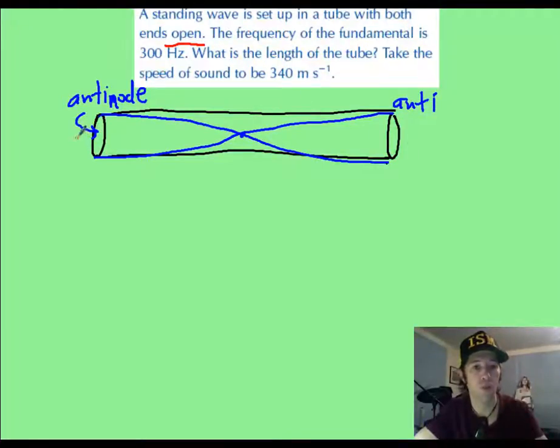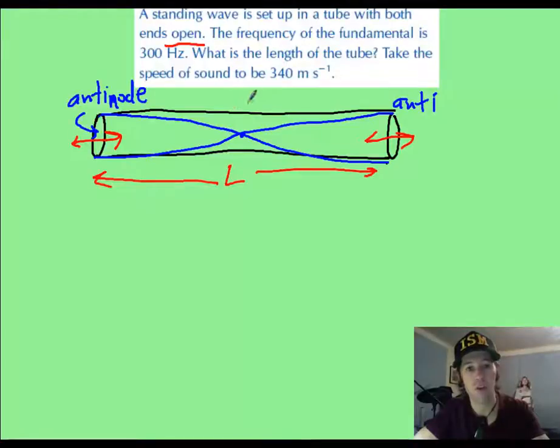So both ends of the tube you should picture as antinodes where the air can wobble back and forth with maximum displacements. And the length of the tube, from end to end, you should know that for fundamental frequency, that is going to be half a wavelength.